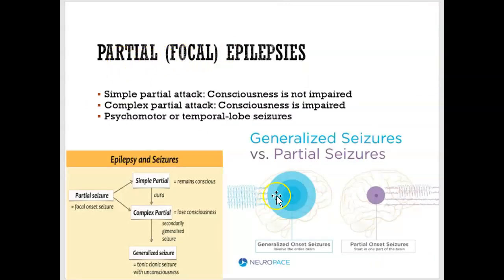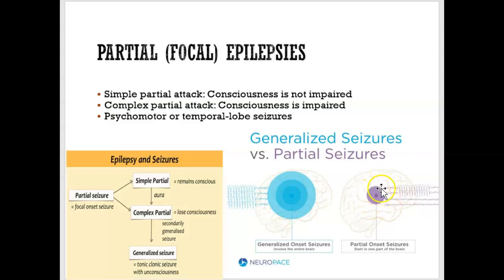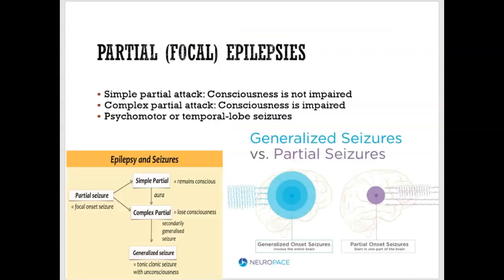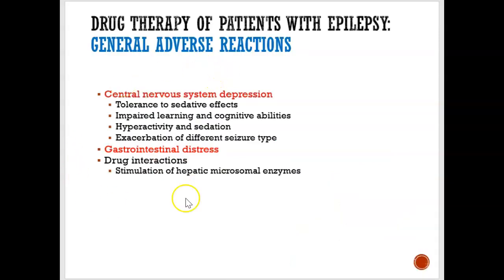With partial seizures, the electrical impulses are occurring in a focal section of the brain — it starts in one part. There are two types of partial seizures: simple partial and complex partial. In simple partial, you are conscious. In complex partial, you are not conscious — that is the main difference between the two.